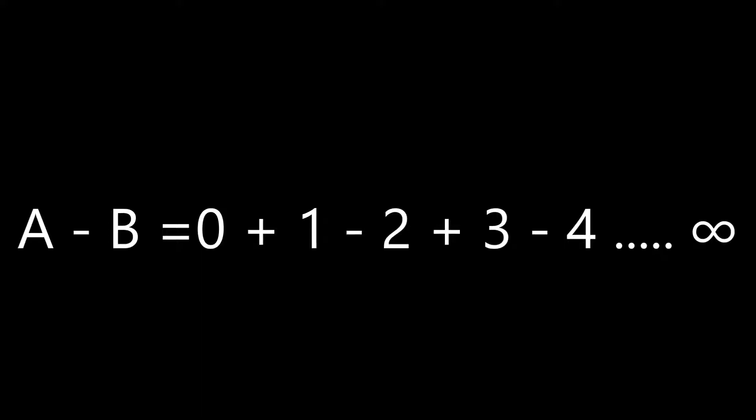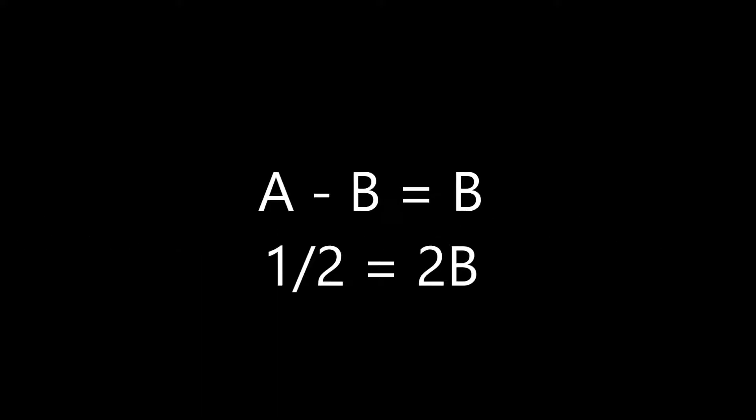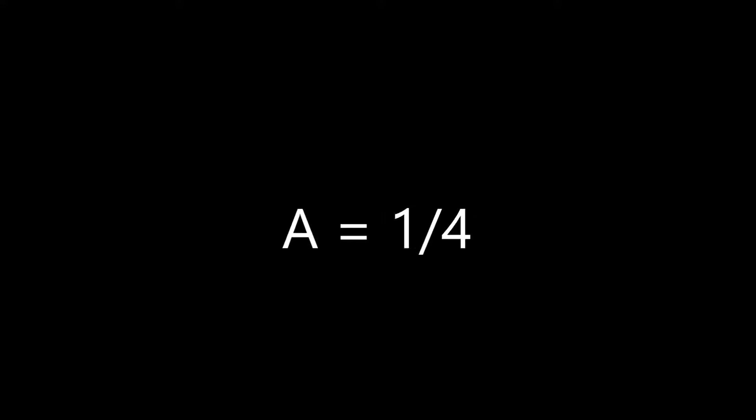Solving this, we yield 0 plus 1 minus 2 plus 3 minus 4 up to infinity. As you have noticed, this sequence 0 plus 1 minus 2 plus 3 minus 4 is just equal to B, which means A minus B is equal to B. Now, since A is equal to one half, substituting gives one half equals 2B. Thus, B is equal to one fourth, which means the sum of the sequence 1 minus 2 plus 3 minus 4 plus 5 up to infinity is equal to one fourth.